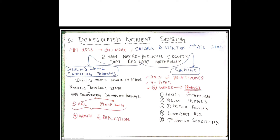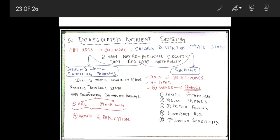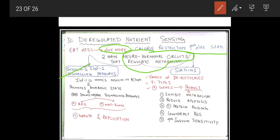The last mechanism of cellular aging is deregulated nutrient sensing. In short, this theory tells us that if you eat less, you will live more — calorie restriction increases lifespan. Before going into the details, we need to understand the normal mechanism of nutrition. There are two important neurohormonal regulation circuits: the insulin and insulin-like growth factor 1 (IGF-1) signaling pathway, and the sirtuins.